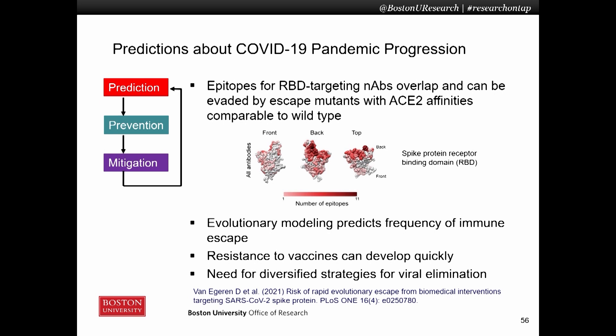We first carried out a structure-function analysis looking at the receptor binding domain or RBD of the spike protein of SARS-CoV-2, the virus that causes COVID-19. The spike protein binds to the human ACE2 receptor as one of the first steps in host cell entry. We showed that epitopes for RBD-targeting neutralizing antibodies overlap substantially and that they can be evaded by escape mutants with ACE2 binding affinities comparable to wild type.